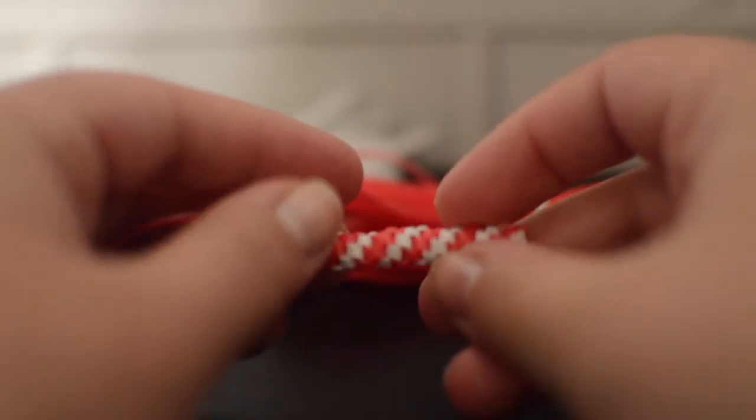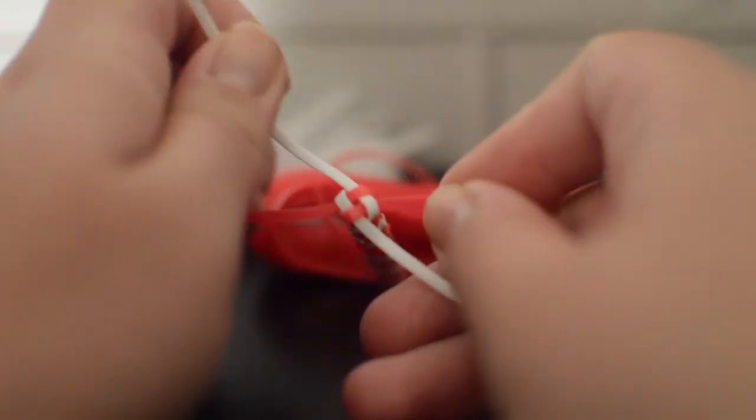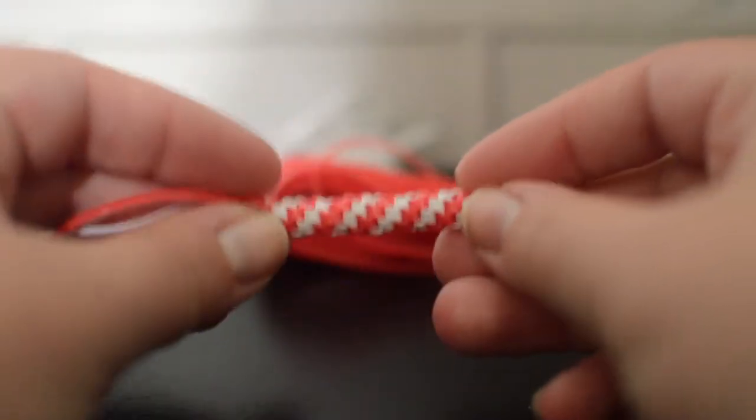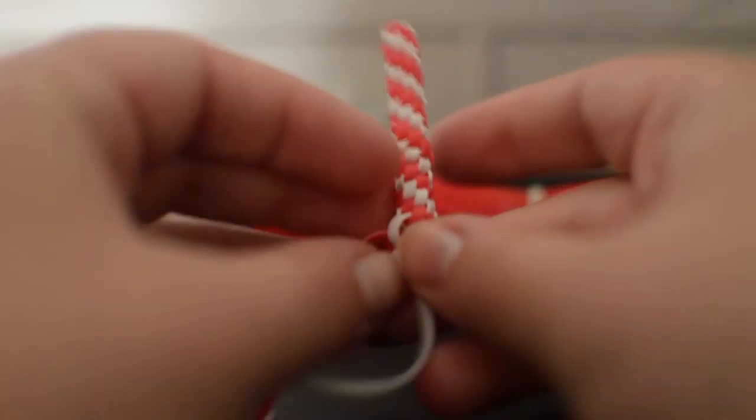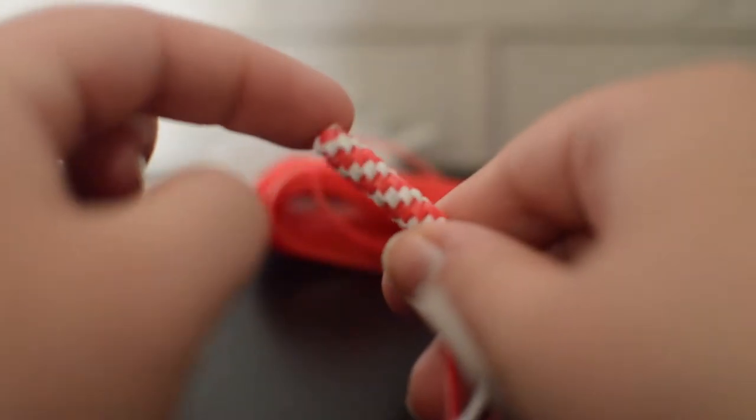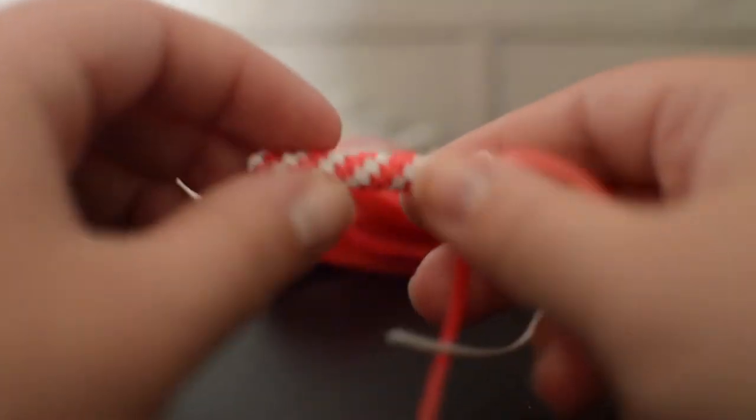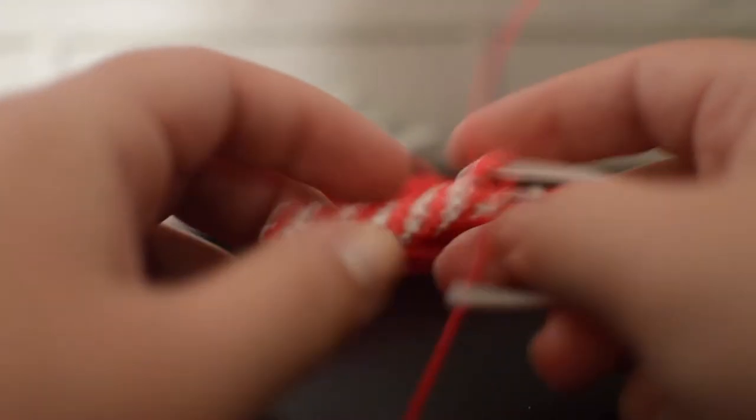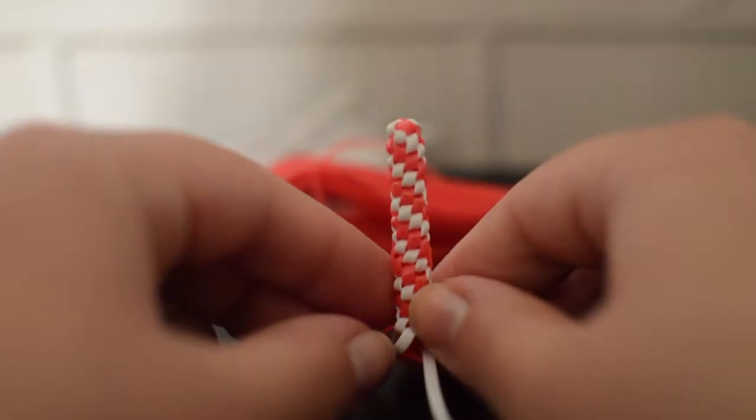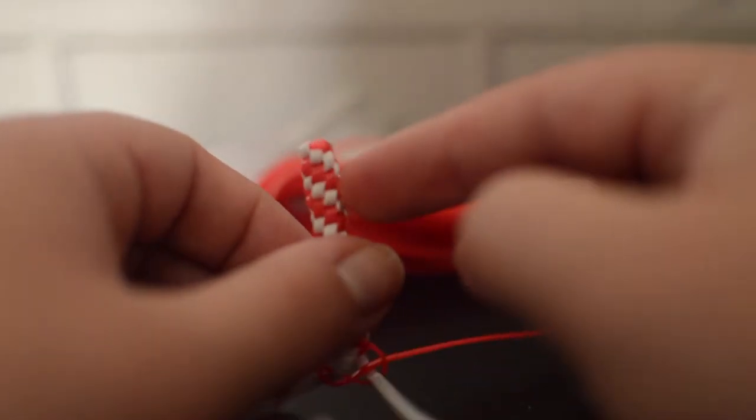In today's video we're going to be working on the twist, which is a basic boondoggle gimp easy lacing camp craft that you can do at home or really anywhere. It's a nice on-the-go project for keychains, key rings, you can make jewelry out of it. It's really easy, super awesome stitch that creates this really pretty almost spirally format.